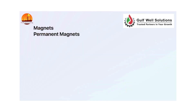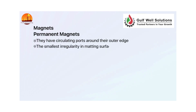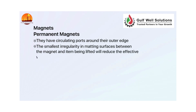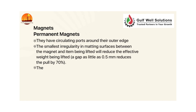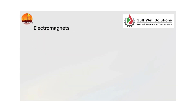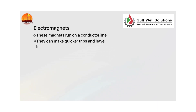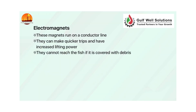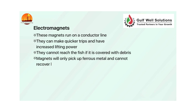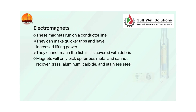Magnets — permanent magnets: they have circulating ports around their outer edge. The smallest irregularity in mating surfaces between the magnet and the item being lifted will reduce the effective weight being lifted — a gap as little as half a millimeter reduces the pull by 70%. They cannot be flown by helicopter and cannot be turned off when running in hole. Electromagnets: these magnets run on a conductor line. They can make quicker trips and have increased lifting power. They cannot reach the fish if it is covered with debris. Magnets will only pick up ferrous metal and cannot recover brass, aluminum, carbide, and stainless steel.